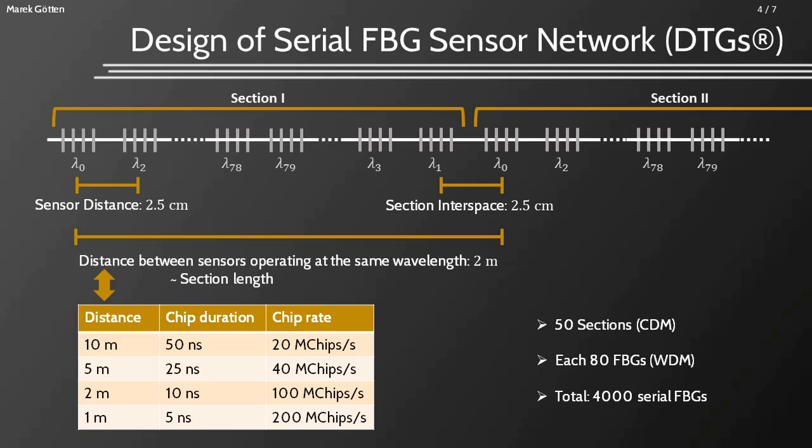This distance is crucial for the CDM part. The chip duration — the length of 1s and 0s of the code — is dependent on this. In the table you can see the dependence: a section length of 2 meters requires a chip duration of maximum 10 nanoseconds, and a distance of 1 meter requires a duration of 5 nanoseconds. With 50 sections and 80 FBGs in each section, a total number of 4,000 serial FBGs in one fiber is achieved.